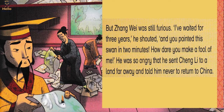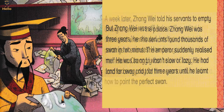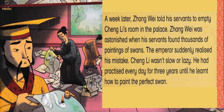"How dare you make a fool of me!" He was so angry that he sent Cheng Li to a land far away and told him never to return to China. A week later, Zhang Wei told his servants to empty Cheng Li's room in the palace.